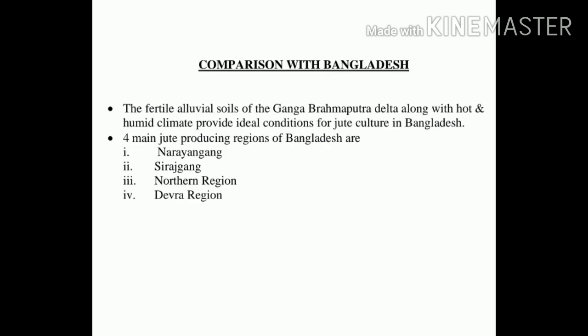In comparison with Bangladesh, Bangladesh is the largest producer of jute in the world. The fertile alluvial soil of the Ganga-Brahmaputra delta coupled with a hot and humid climate provides ideal conditions for jute cultivation in Bangladesh. Almost all parts of Bangladesh produce jute, but four regions are outstanding: Narayanganj, Sirajganj, Nadan Region and Devra Region. This country provides better quality jute which is in great demand in the international market. India is the largest buyer of jute from Bangladesh because most of the jute mills are located in India. The USA and Britain are the other purchasers.